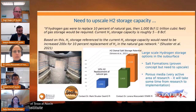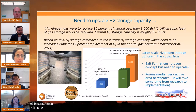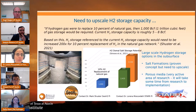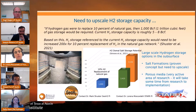When we talk about hydrogen generation and distribution, we also need to think about hydrogen storage, and scale matters. If we were to replace just 10% of natural gas in the US, we would need around 1,000 BCF of hydrogen storage capacity, but right now we have roughly 5 to 8 BCF. That means we'll have to increase our current hydrogen storage capacity by a factor of 200.